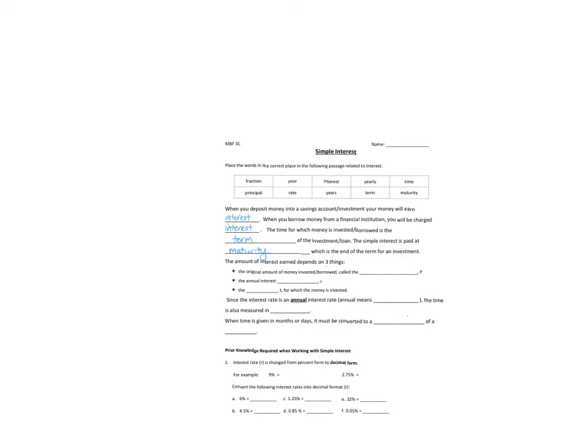The amount of interest earned depends on three things. The first thing is the amount of money borrowed or invested, and that is called the principal, or P.